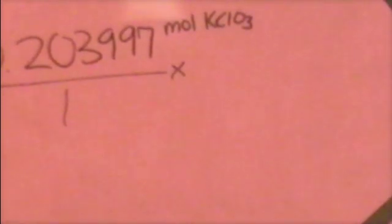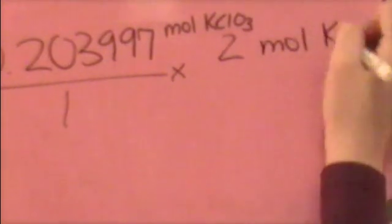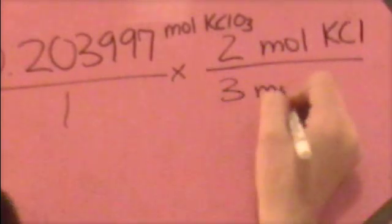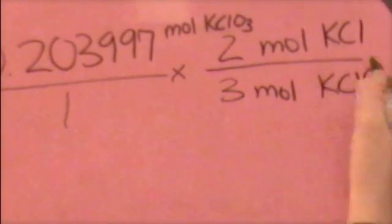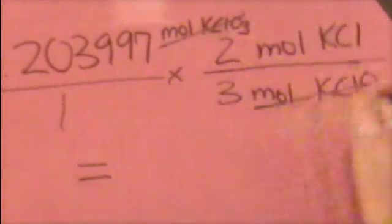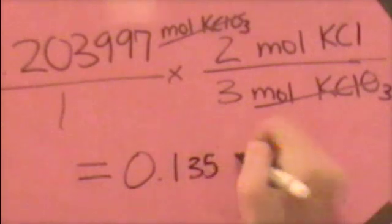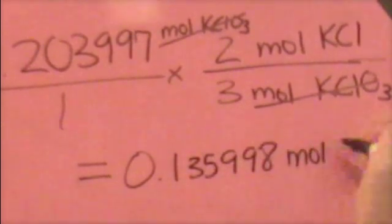Now that we know how many moles of KClO3 we have, we're going to multiply that times the ratio of potassium chloride, which you're trying to find, to potassium chlorate. In our equation, which we looked at at the beginning, we have 2 moles of KCl and 3 moles of KClO3. This gives us about 0.135998 moles of KCl.